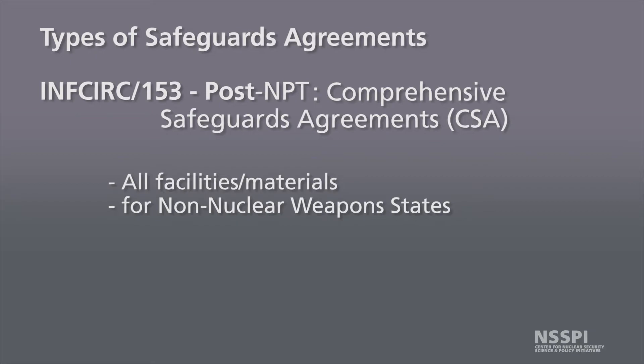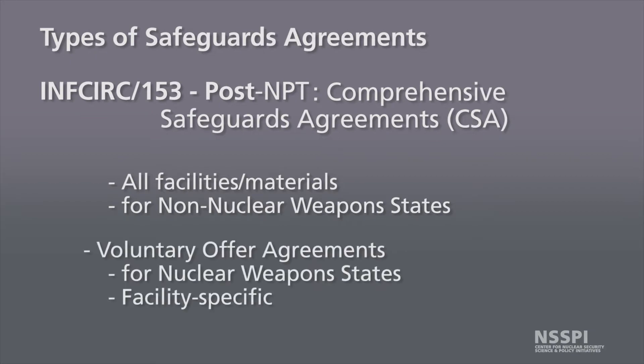INFCIRC/153 also includes Voluntary Offer Agreements, and these are specific to nuclear weapons states — those states codified as having nuclear weapons according to the NPT. They can conclude facility-specific safeguards agreements in the style of comprehensive safeguards agreements, but not covering all nuclear materials and facilities within the state. The nuclear weapon state volunteers a specific facility with specific materials and gives the IAEA a specific access that it negotiates.